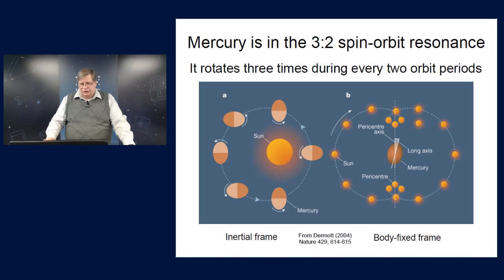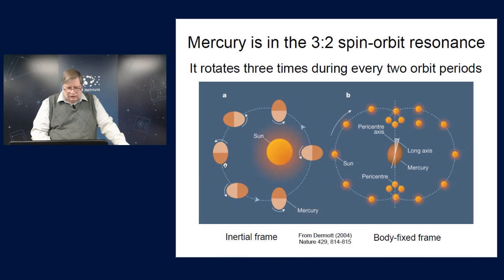This situation is depicted here in a nice figure from a paper by Dermot. If you look at it in an inertial frame, like you're just watching from some distant point in space, Mercury is this two-toned football-shaped object. At periapsis, when it's closest to the sun, its long axis points towards the sun. But then it's rotating one and a half times as fast as its orbital rate.